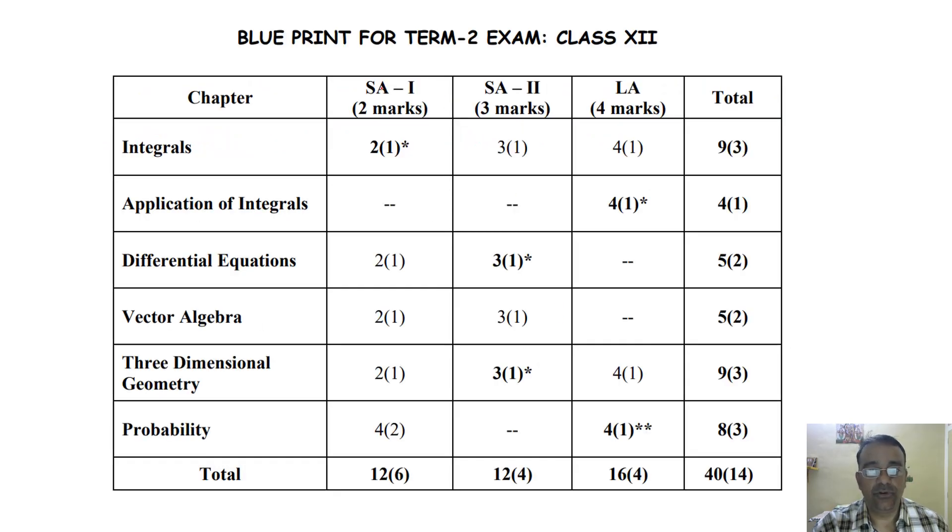So this is the blueprint. Four sections are there. Section A, Section B, Section C. Three sections are there. First section has 2 marks questions.